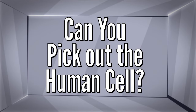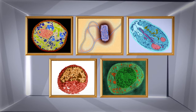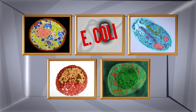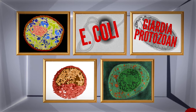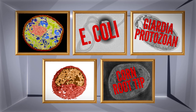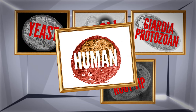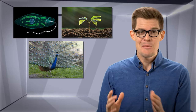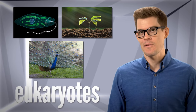Can you pick out the human cell? Complex life looks pretty different on the outside, but whether it's a plant, a protist, or a peacock, at the most basic level, all of Earth's complex life — eukaryotes — are built from essentially the same stuff.